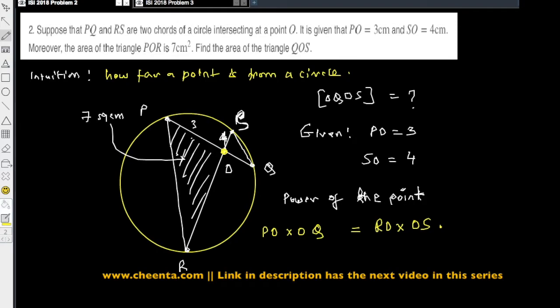So this tells us that PO over OS is equal to RO over OQ. And we already know the value of PO over OS, right? Because PO is 3 and OS is 4. This is 3 by 4.